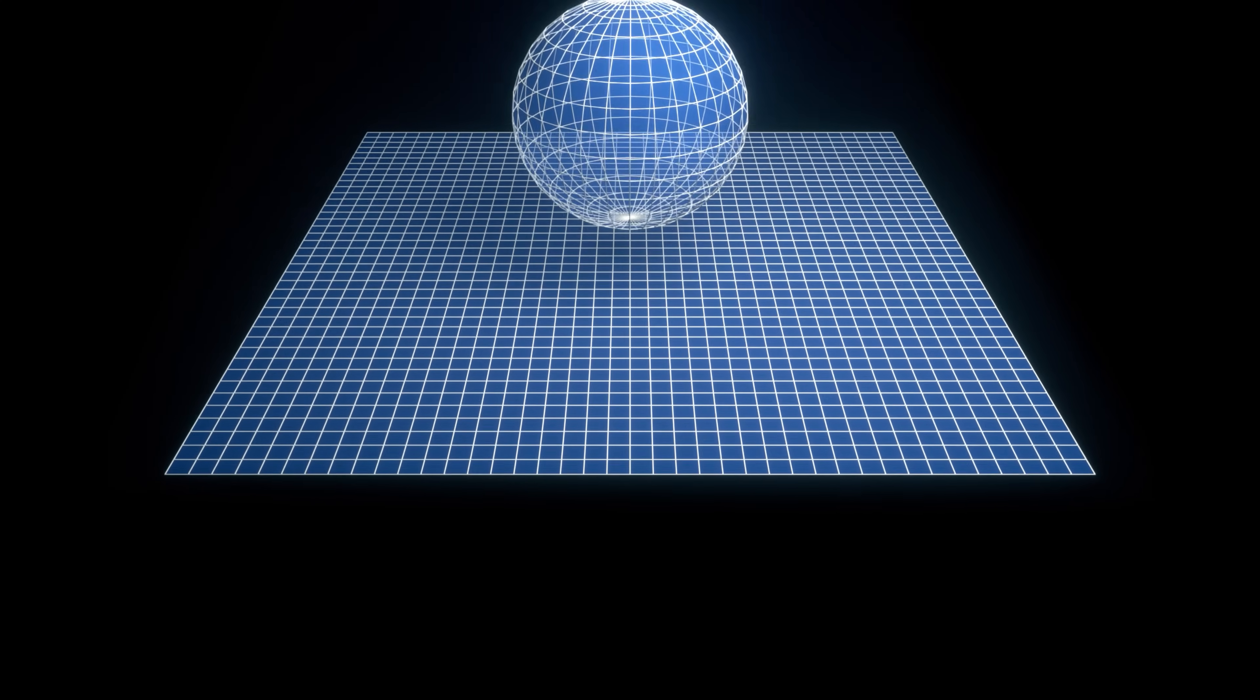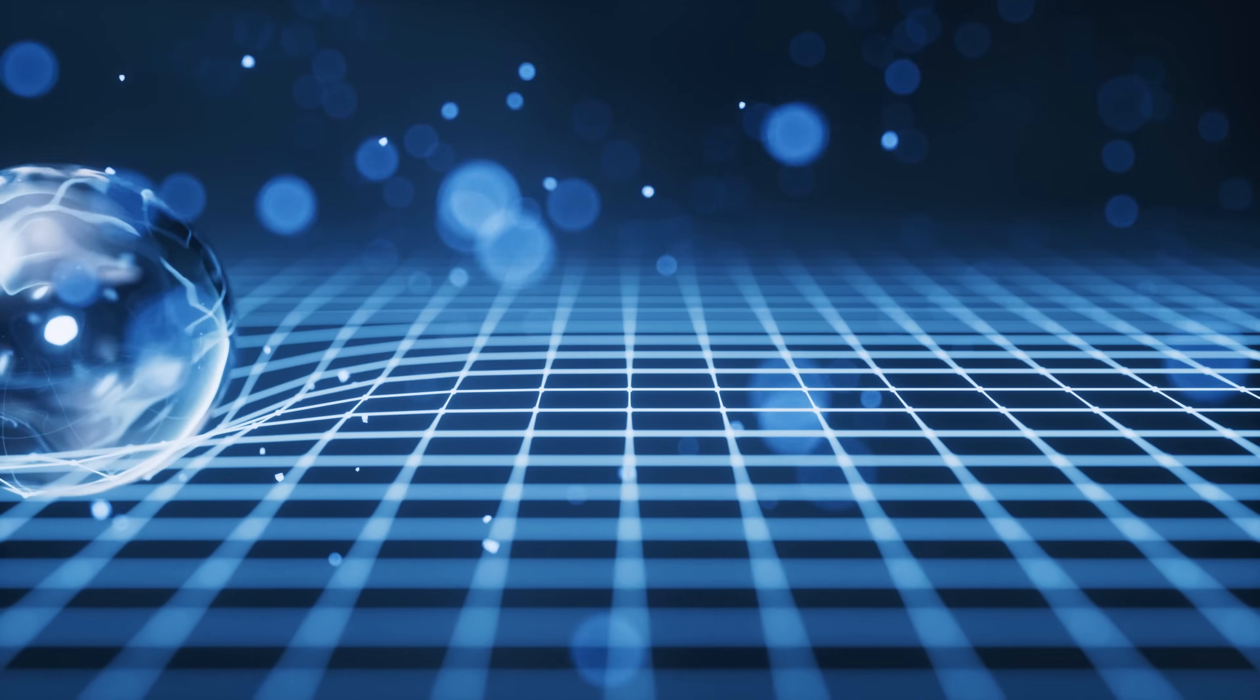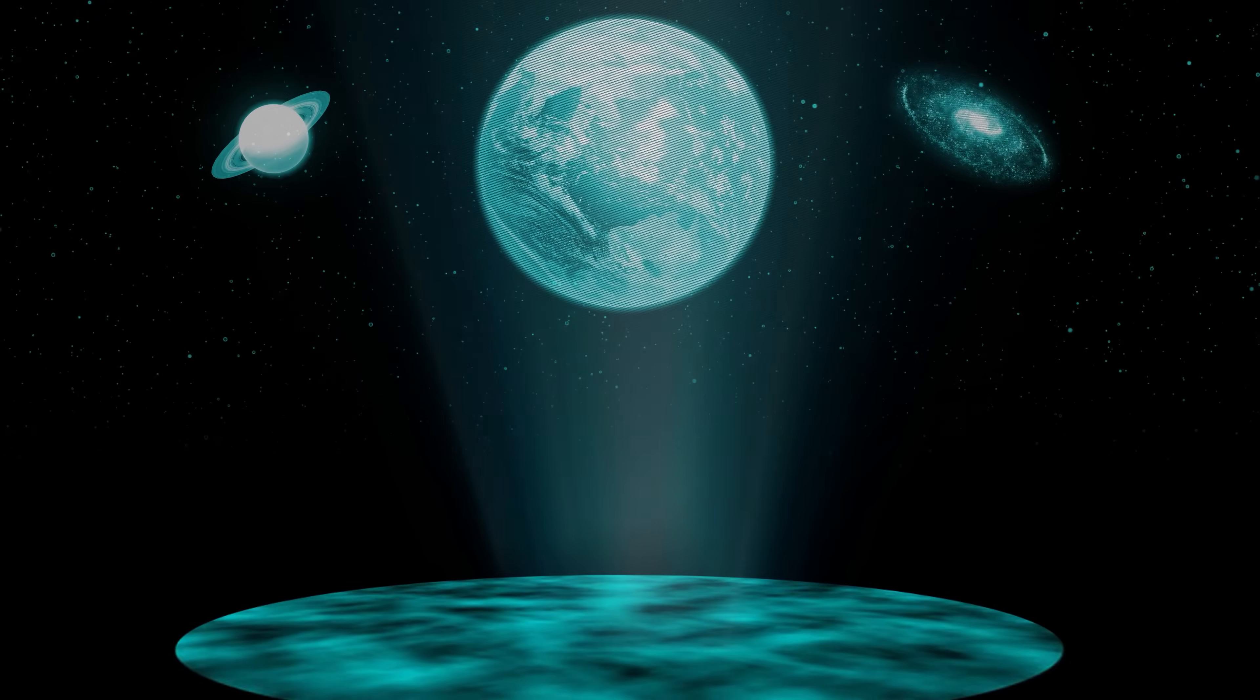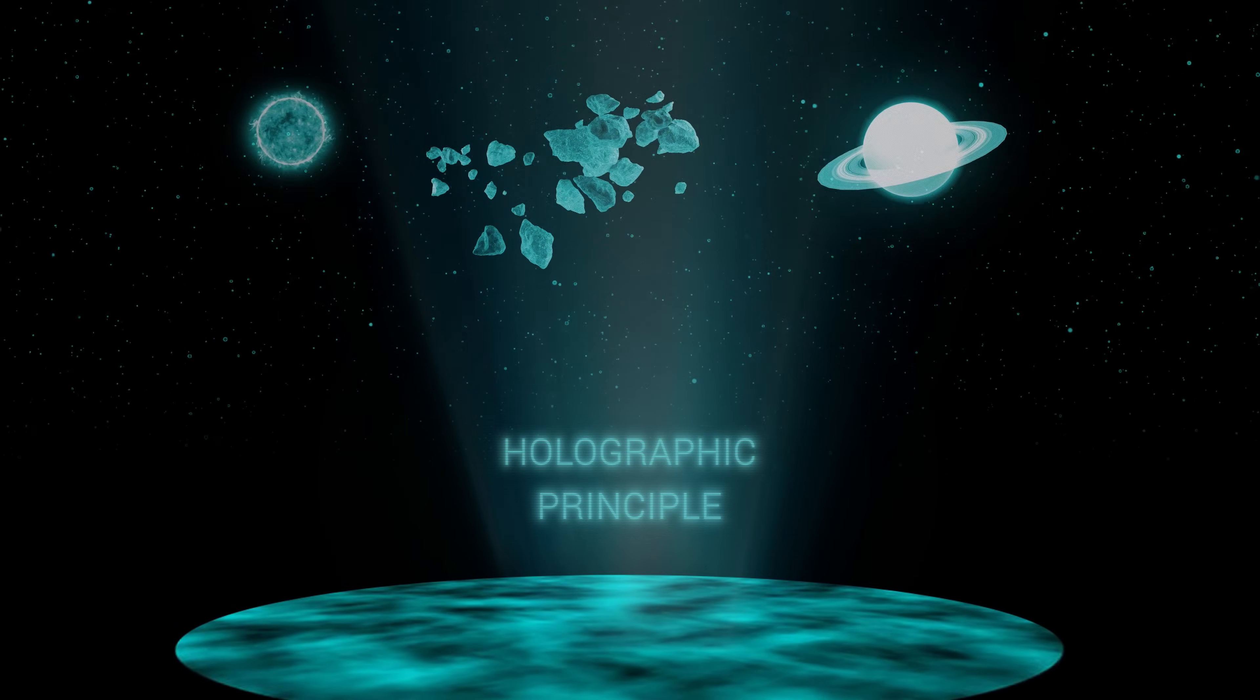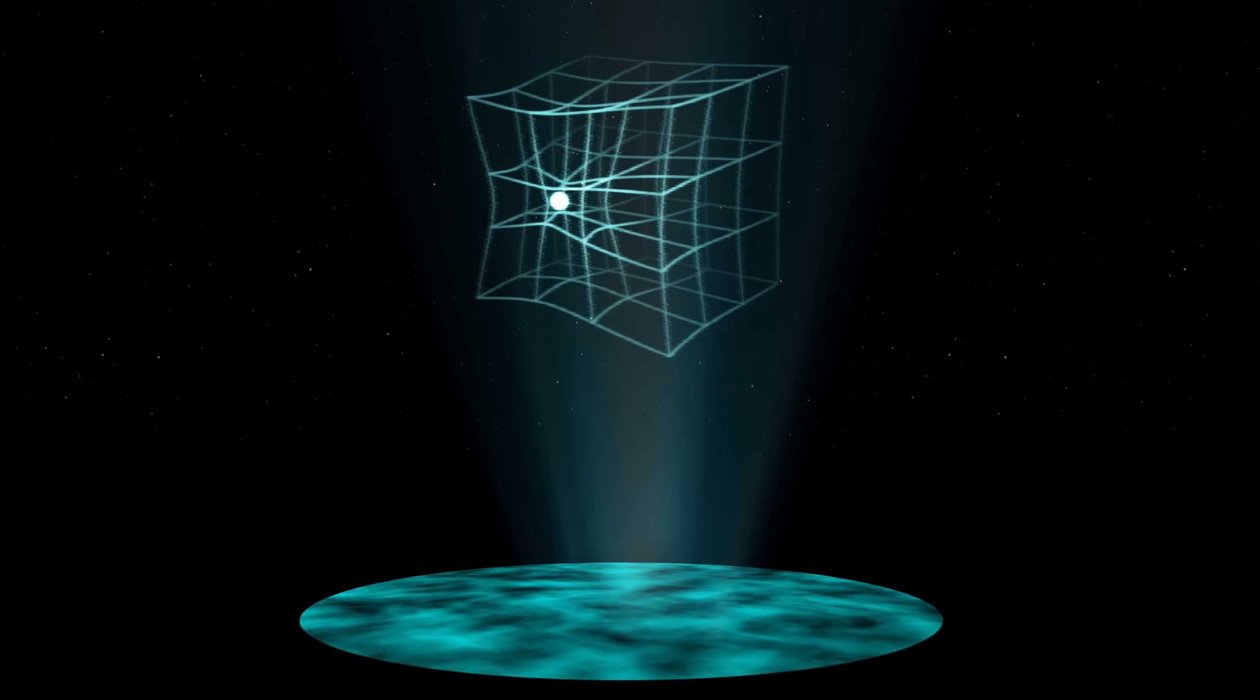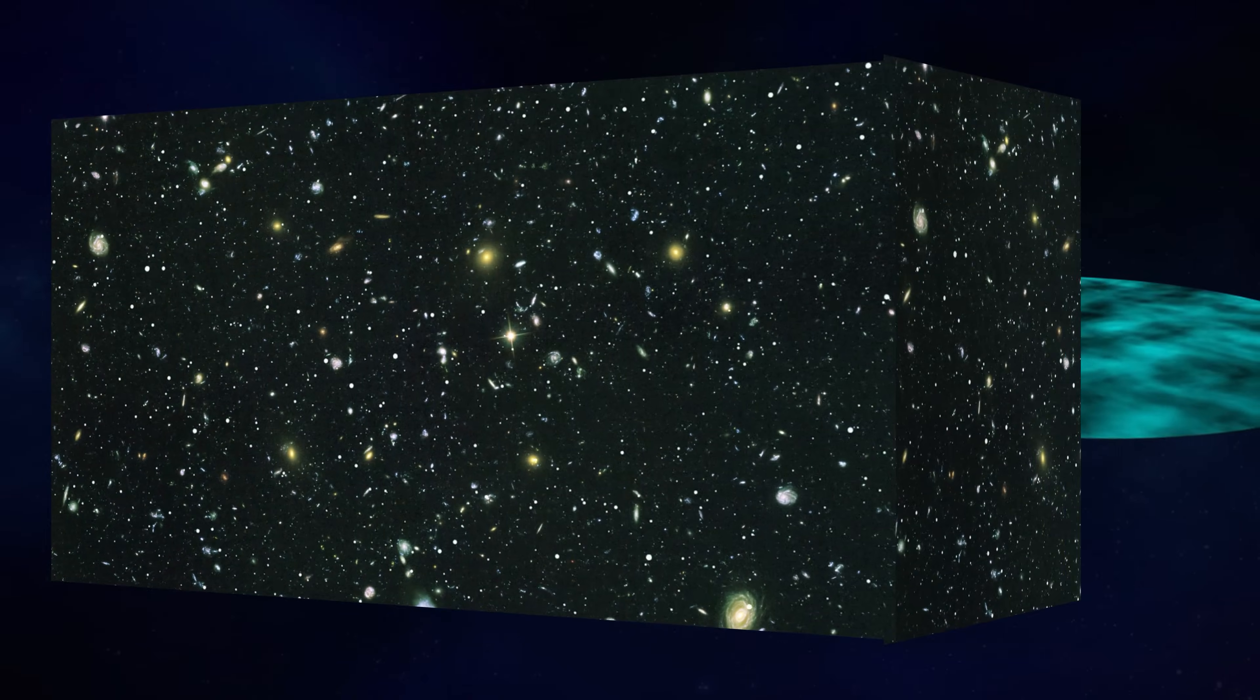According to the new view, space could bend and curve in the presence of mass and energy, calling into question the very notion of its absoluteness. Amid the shifting perspectives, a radical idea emerges: the holographic principle. This principle suggests that our three-dimensional perception of the universe may be akin to a hologram, a projection from a two-dimensional surface located at the edge of space.